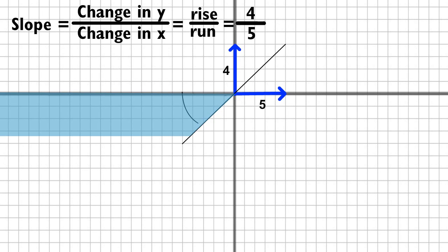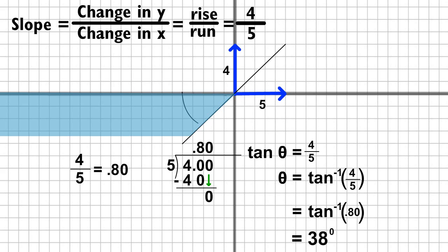If the pond had a four-fifths slope, it would have been much safer for Perry to dive into. A four-fifths slope equals point eighty. Press second, tan, then enter point eighty to see that a four-fifths slope equals thirty-eight degrees.